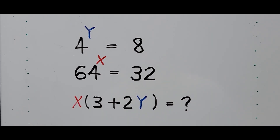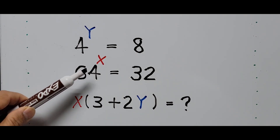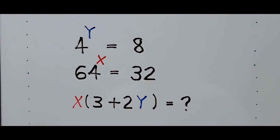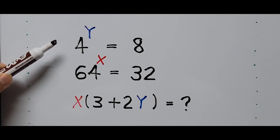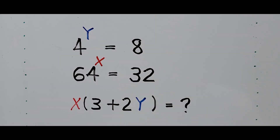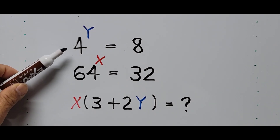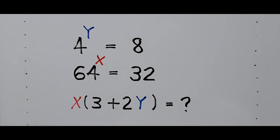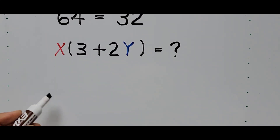Since the problem presents itself with conditions in exponential form — 4 raised to y equals 8 and 64 raised to the x power equals 32 — before finding the value of the algebraic expression, we need to gain a common base. Converting the bases into a common base will make solving the problem easier. We first focus our attention on the first exponential equation: 4 raised to y equals 8.